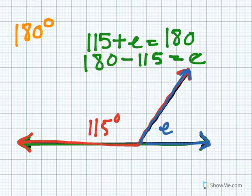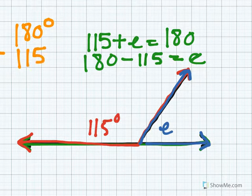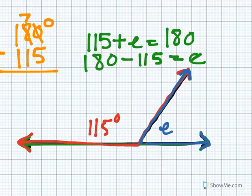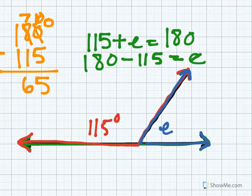To solve for the unknown, I'm going to do 180 minus 115. When I do 180 minus 115, I get 65 degrees. That means that the unknown angle E is equal to 65 degrees.